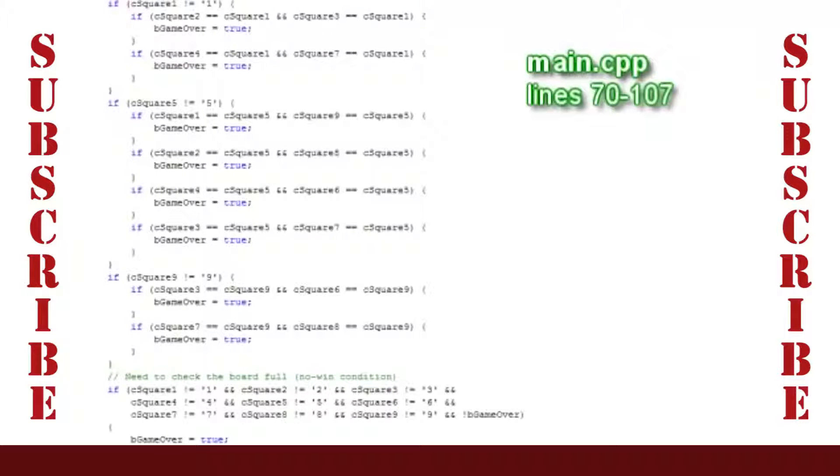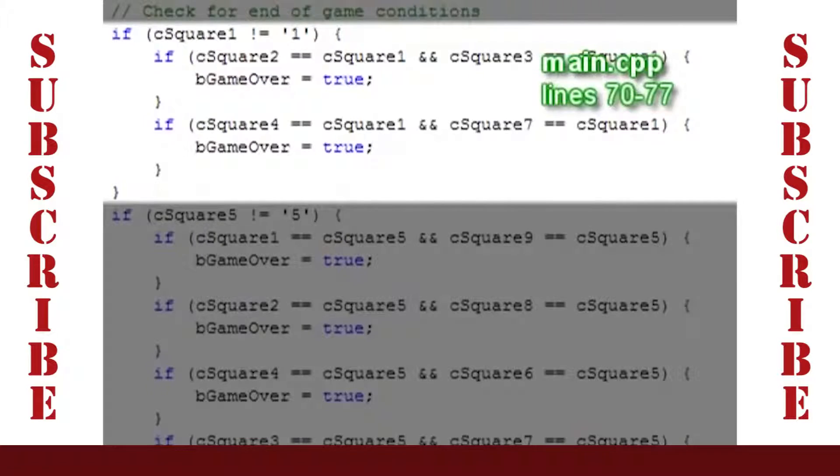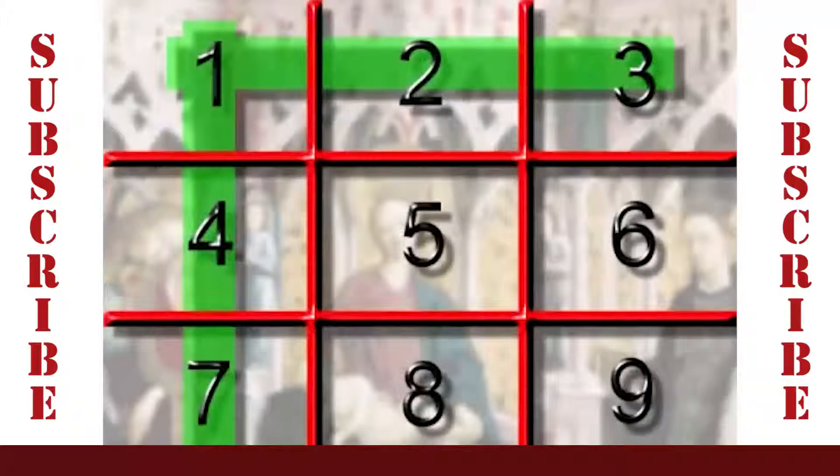After a valid move is entered, a series of checks are made for an end of game condition. Note that there are nine ways to end the game. Eight win conditions and one draw. The first if statement contains the two win conditions that run through square one.